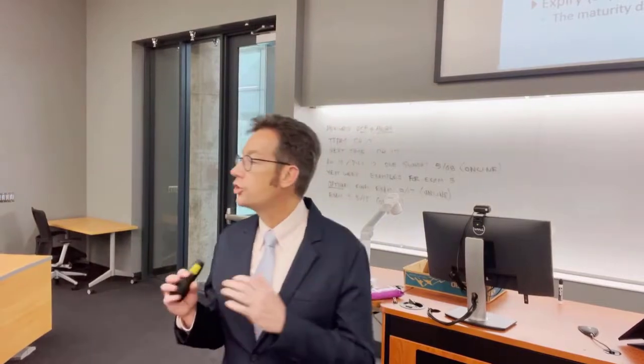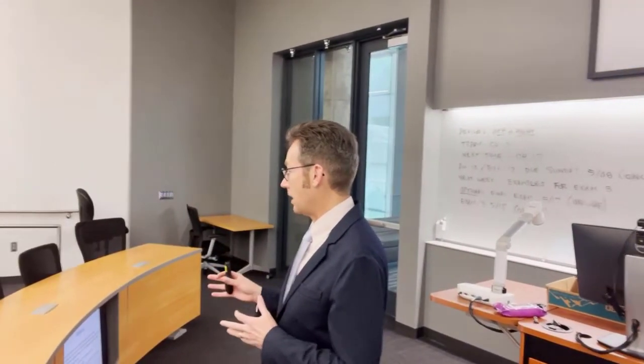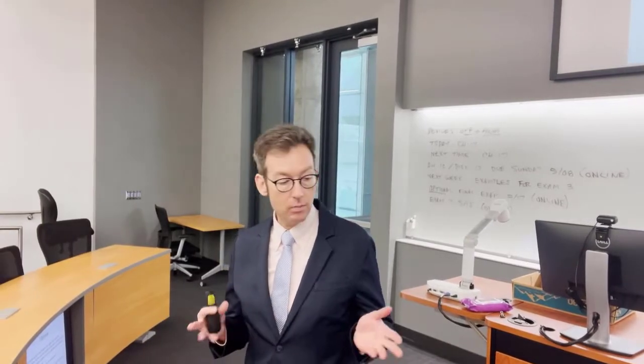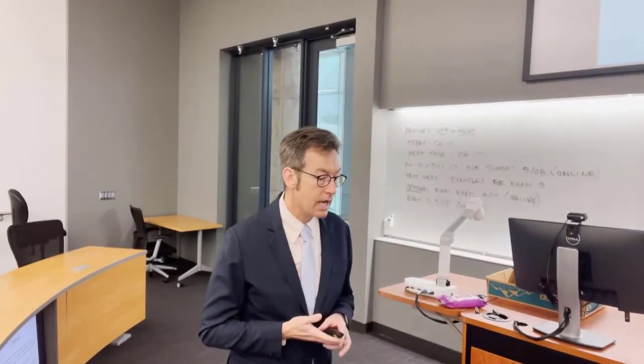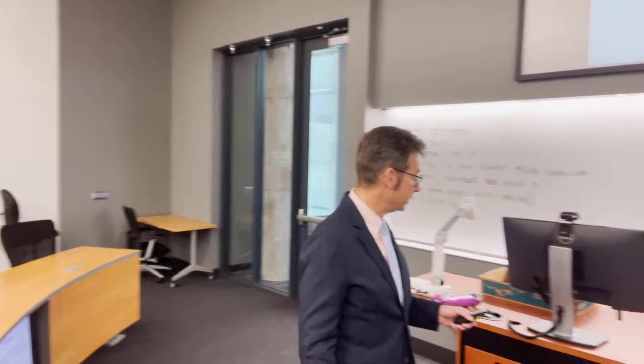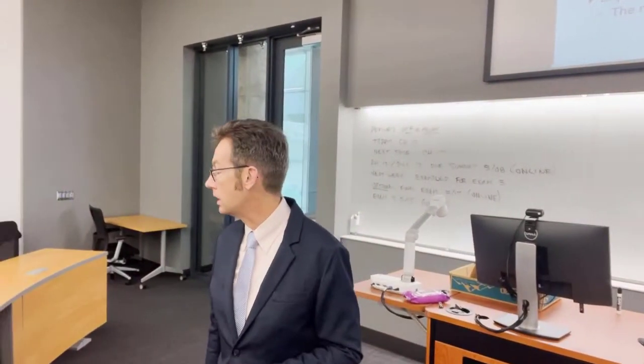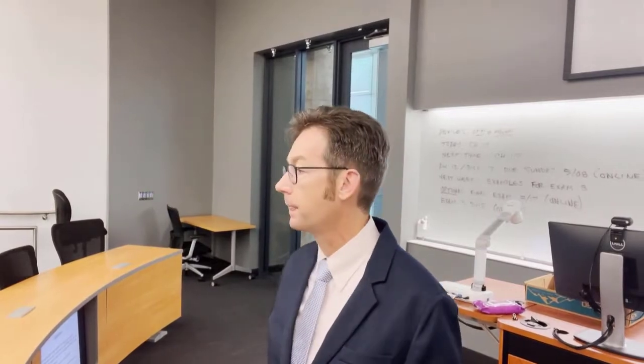The strike price or exercise price is the price we've agreed to transact at, and it doesn't change over the life of the option — kind of like the face value on a bond. Expiry is the maturity date of the option. If you don't exercise it by that day, the option becomes worthless and it just dies.